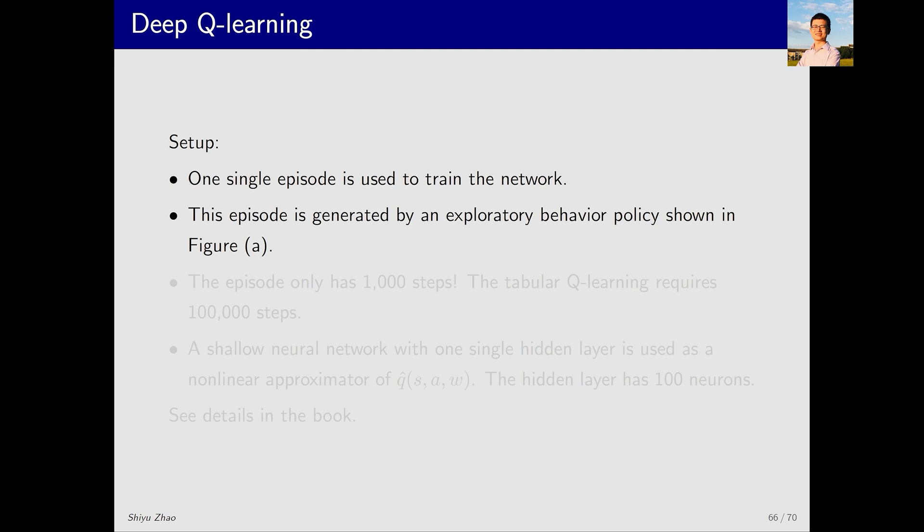Second, this episode is generated by an exploratory behavior policy which assigns an equal probability of 0.2 to each action. Third, this episode consists of only one thousand steps. Previously, when we introduced tabular Q-learning, we used an episode that had 100,000 steps. Now with just 1,000 steps, we're using only one percent of the data. We'll see whether deep Q-learning can achieve the same results with this much smaller dataset.